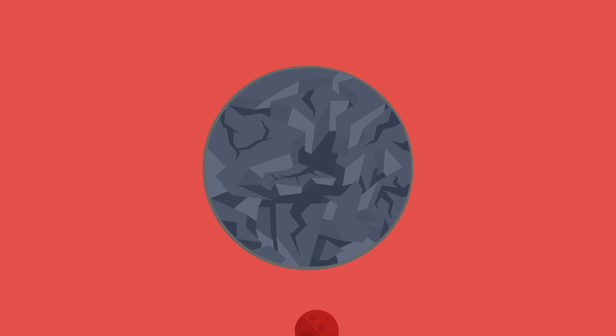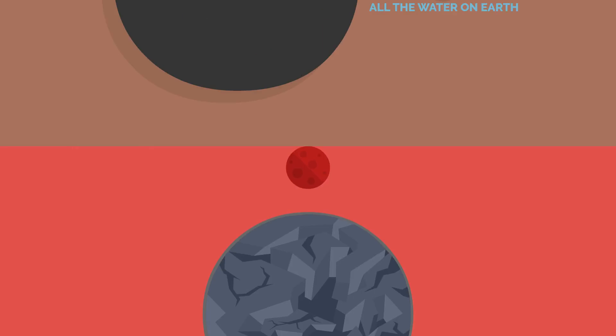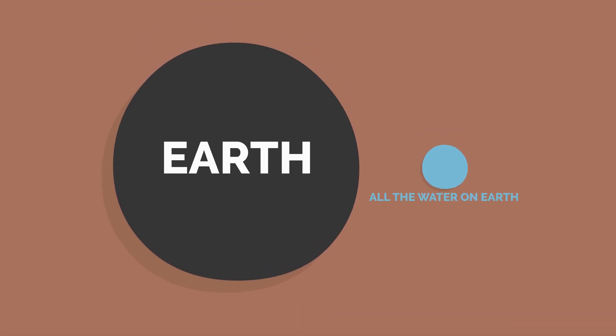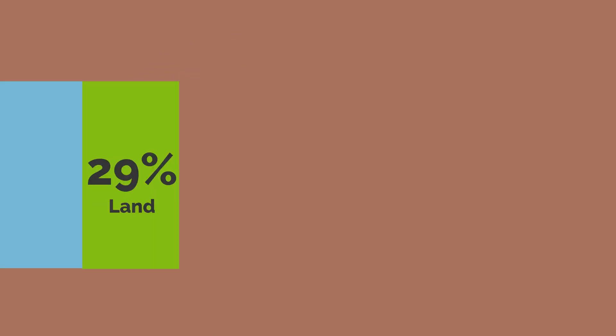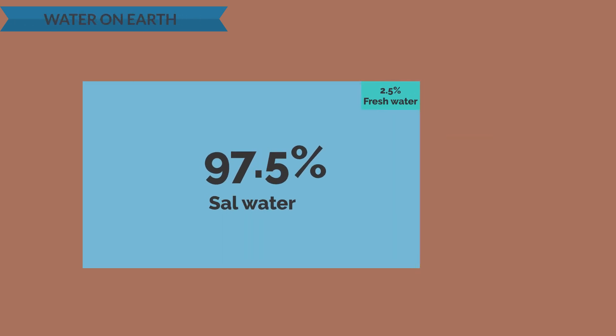But something was about to change drastically. Earth cooled down; water from the inside of the Earth wandered to the surface and rained down on Earth, only to vaporize again and become clouds. Millions of asteroids brought more and more water to our planet. All the water on Earth has about this volume compared to Earth today. The surface of Earth is 71 percent water and 29 percent land. 97.5 percent is salty water, while only 2.5 percent is fresh water.